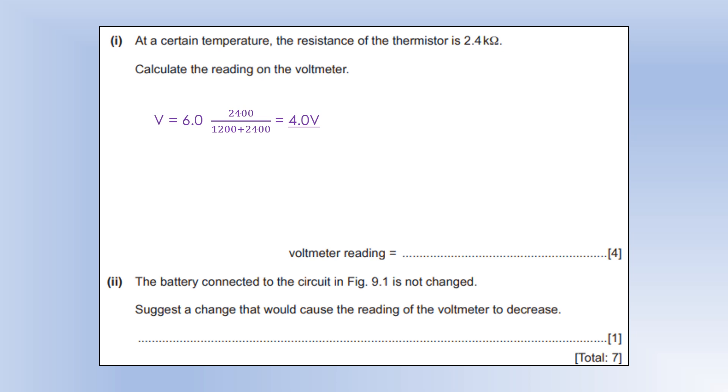The battery connected to the circuit is not changed. Suggest a change that would cause the reading on the voltmeter to decrease. That would be if we changed the 1.2 kilo-ohm resistor to a larger one, or we could have increased the temperature. That would also have worked as well.